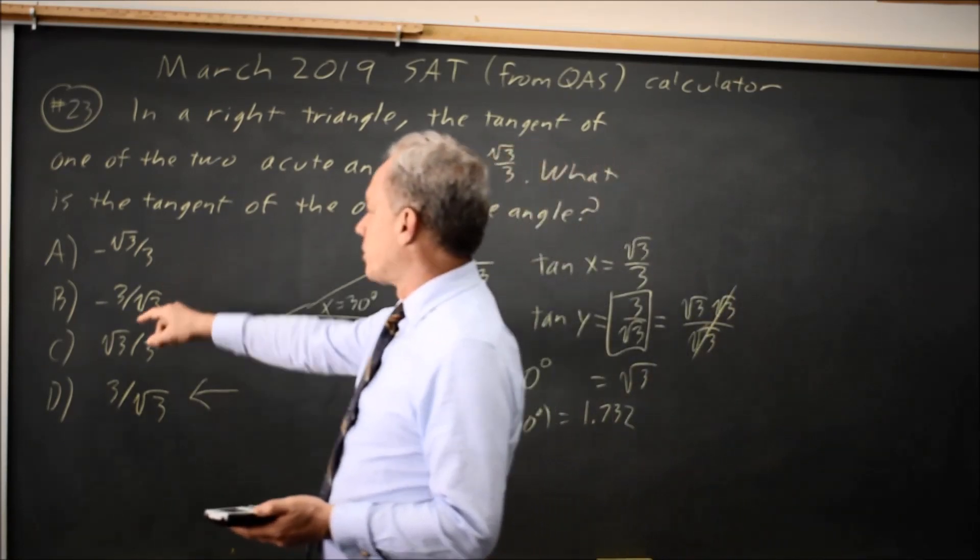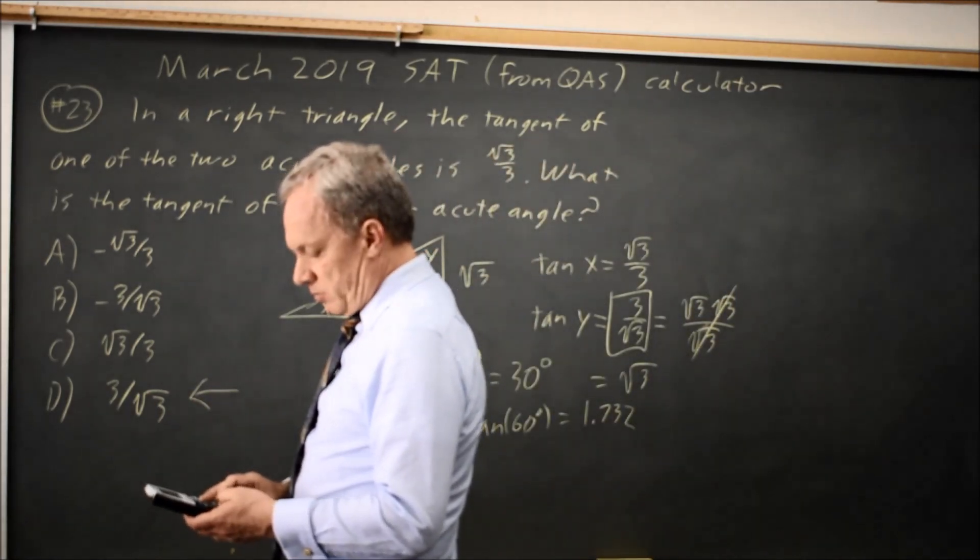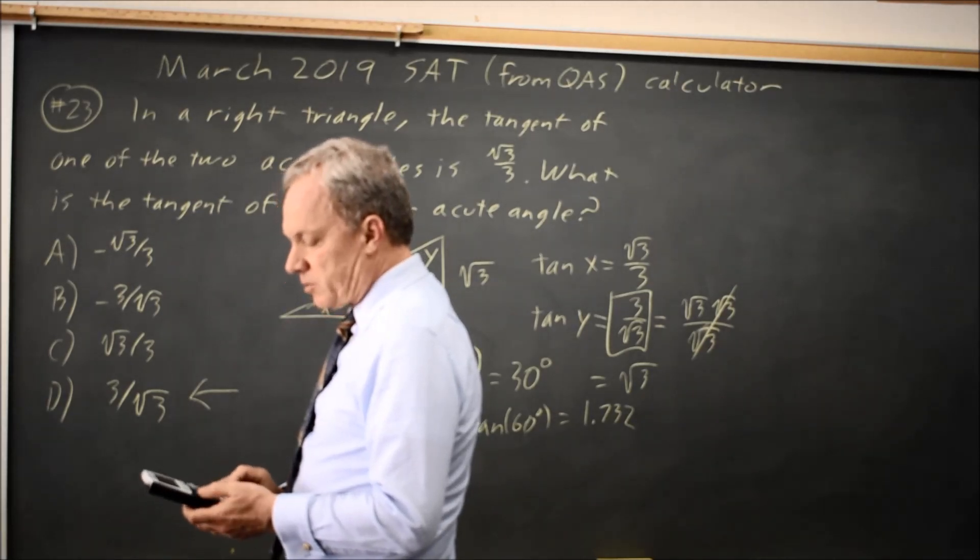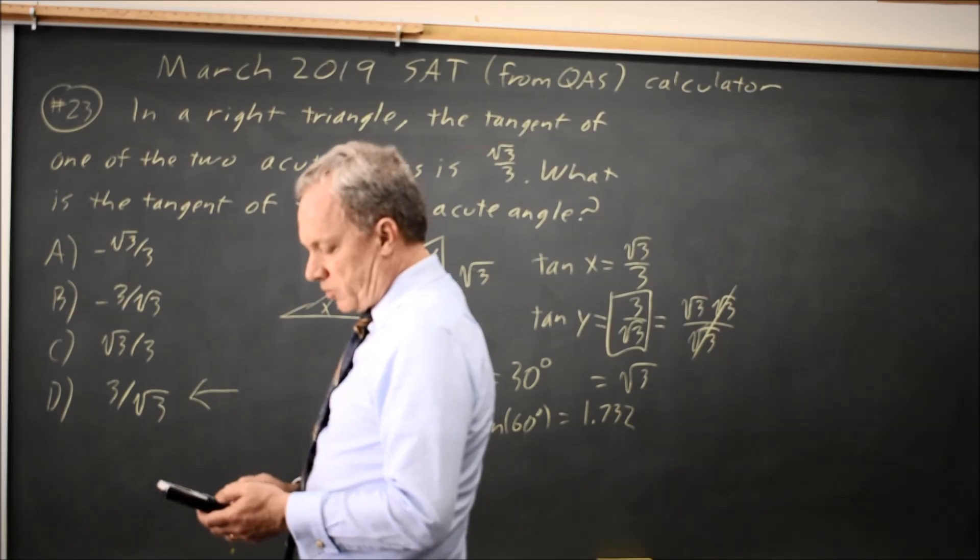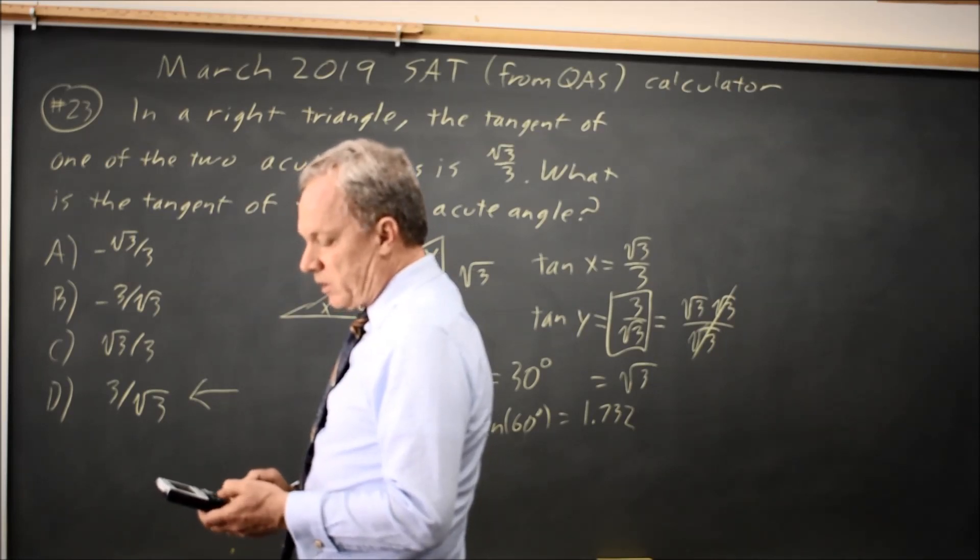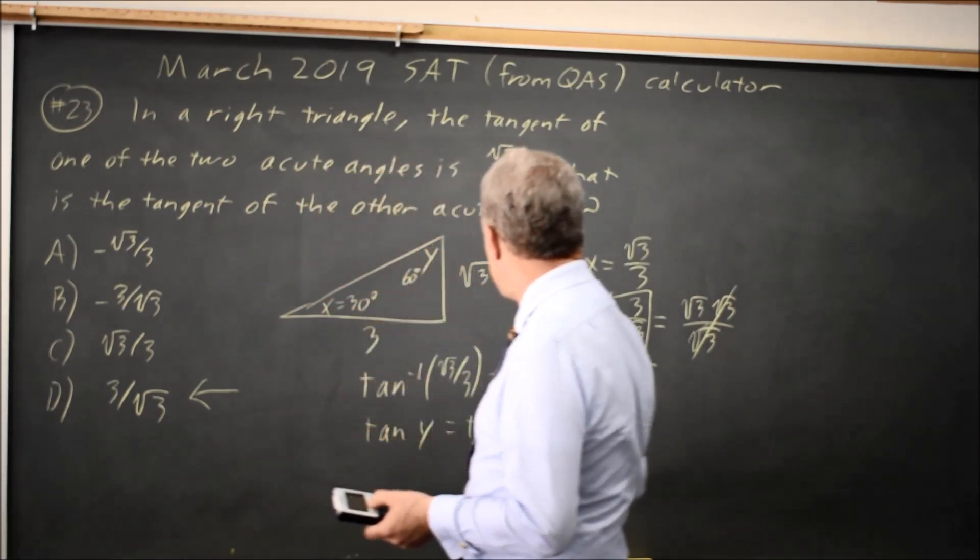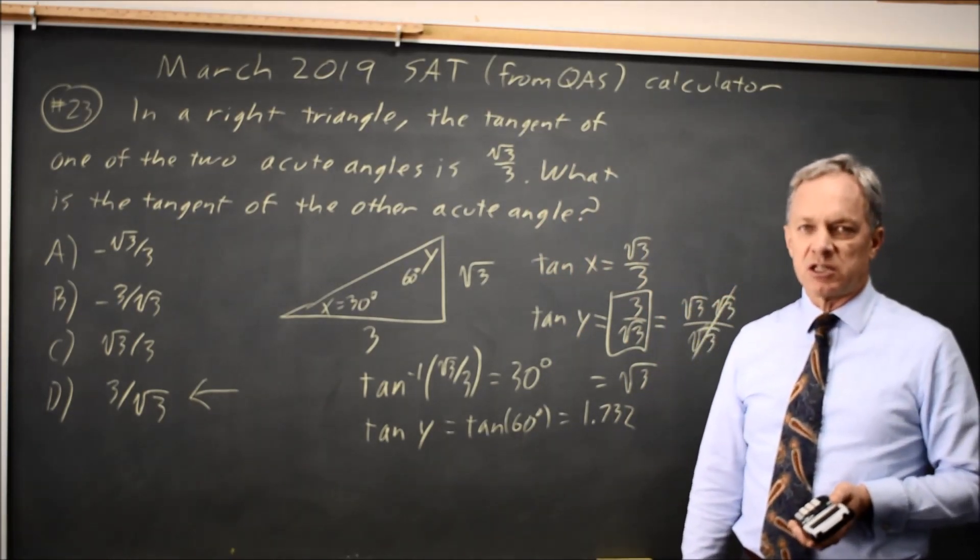So choices A and B are wrong because they're negative. Choice C, root 3 over 3 is 0.577. And choice D, 3 over root 3 is 1.732, which matches. So I could have used the calculator to solve this also.